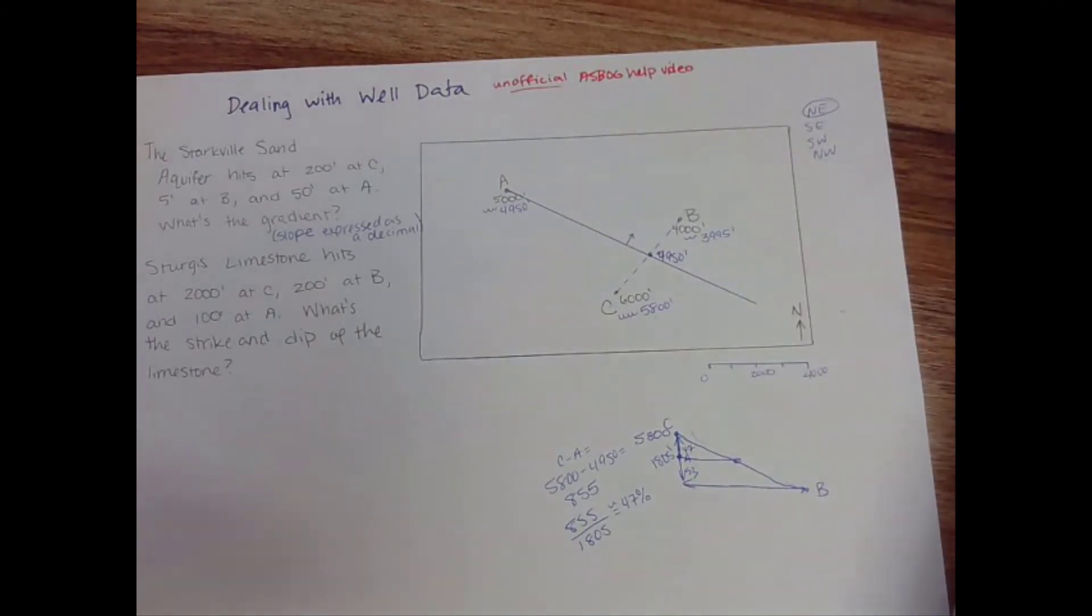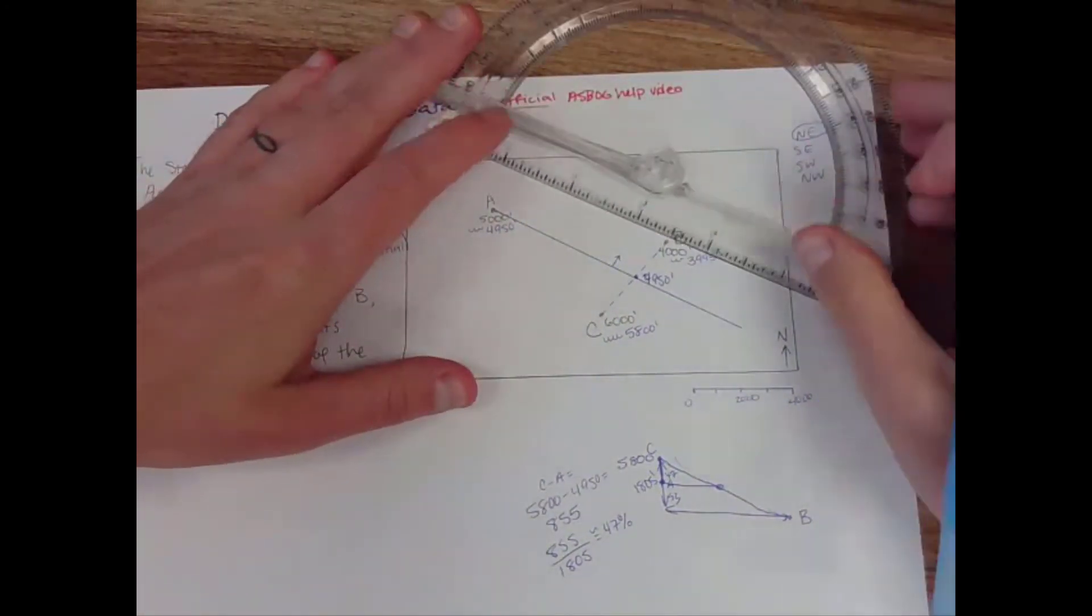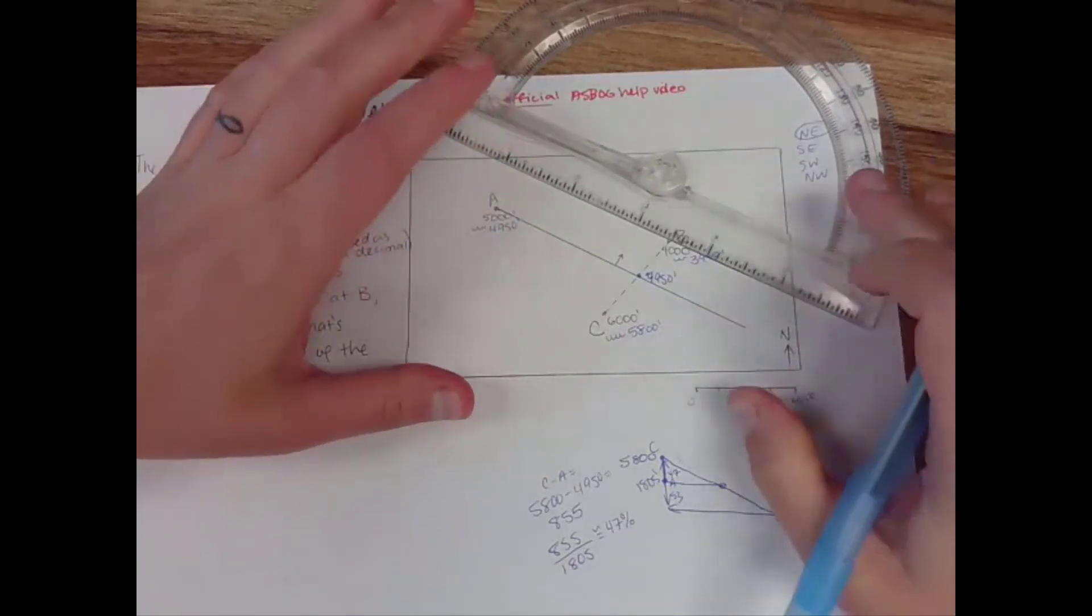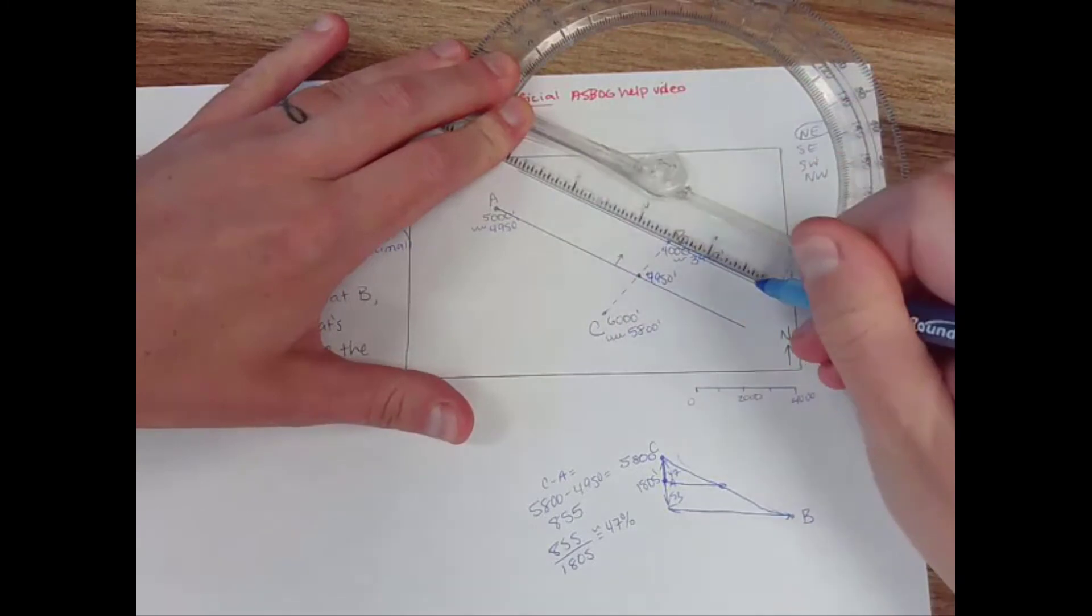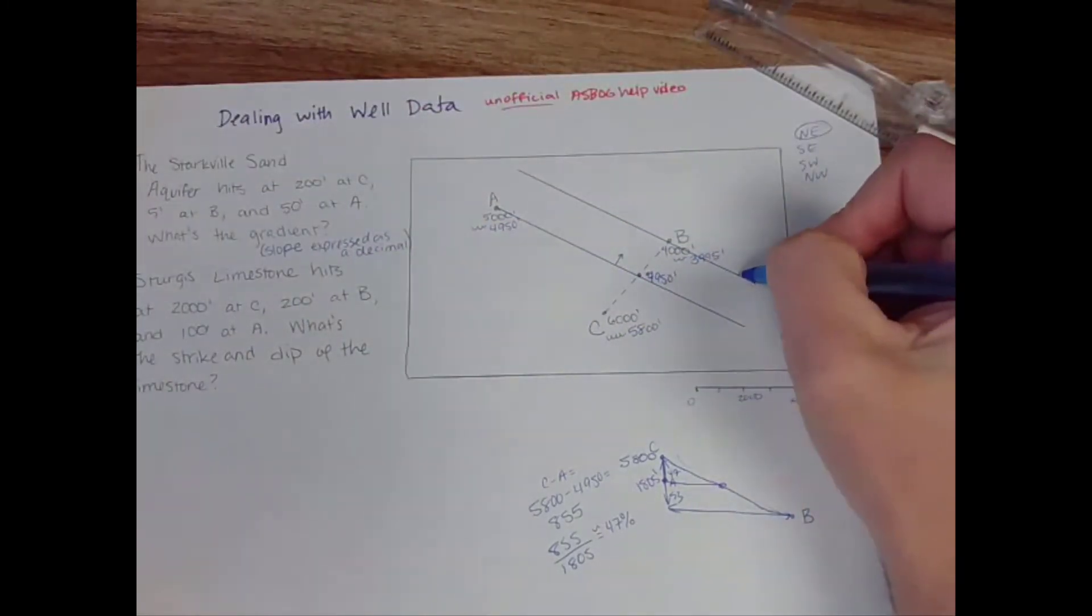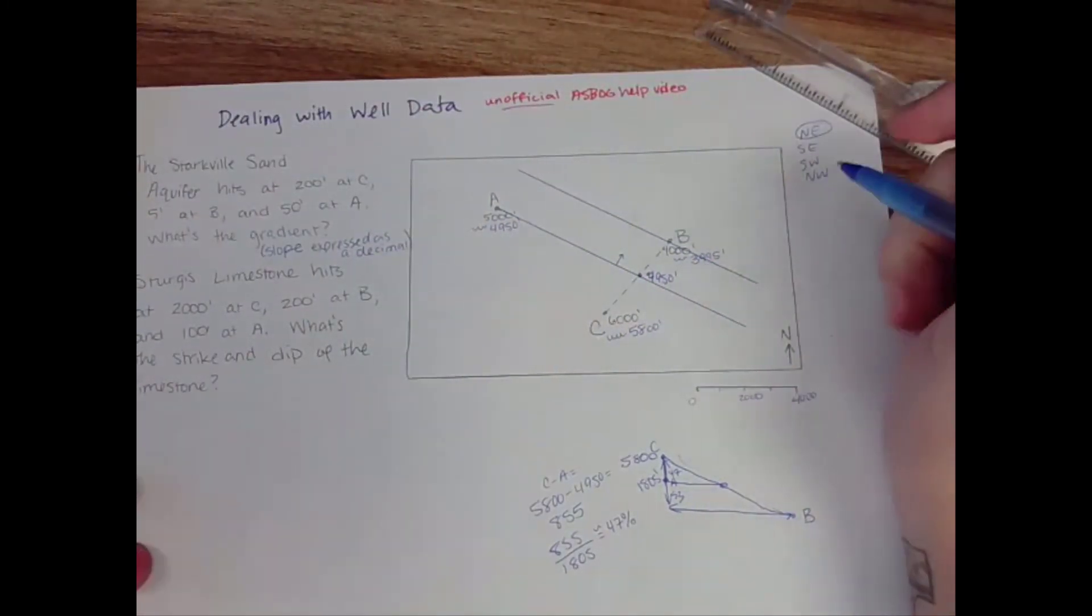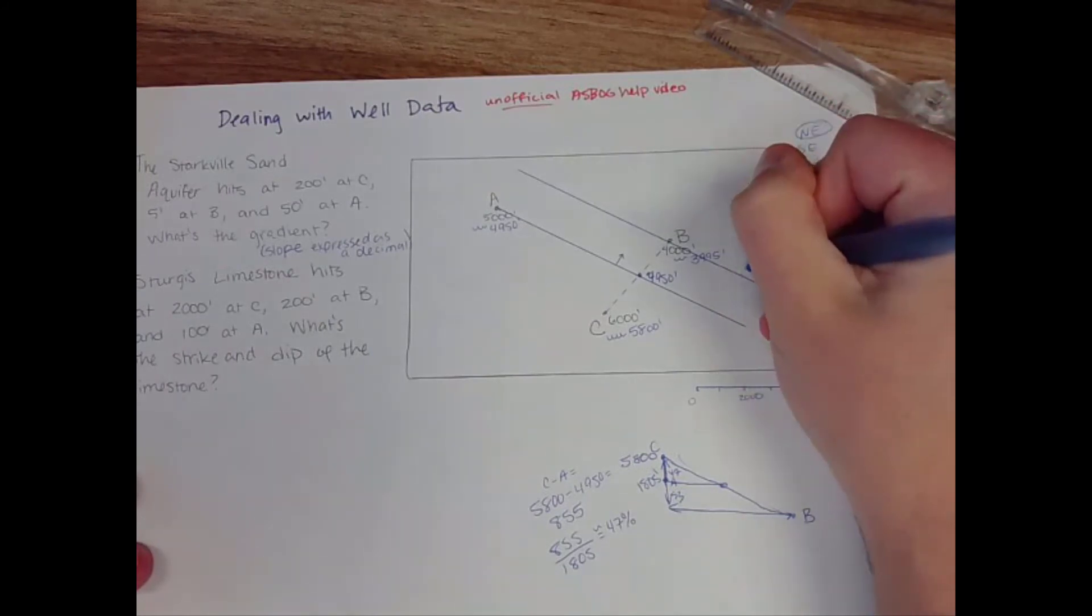When it asks for gradient it's looking for slope expressed as a decimal. So I'm going to draw a line parallel to this one going through another known elevation. This line is also essentially a strike line but where the elevation is 3,995.